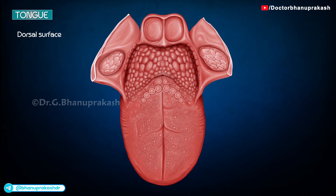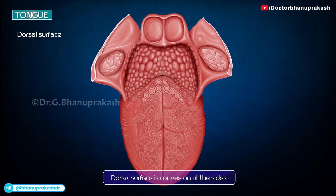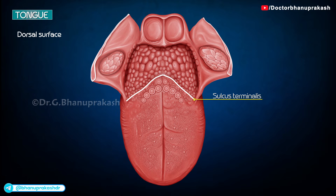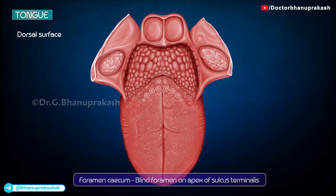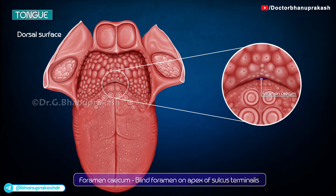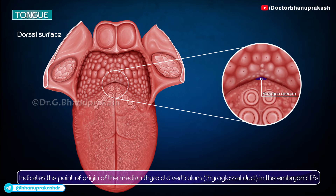The dorsal surface is convex. It is divided by a V-shaped sulcus, the sulcus terminalis, into two parts: ventral two-thirds, or oral part, and dorsal one-third, or pharyngeal part. The apex of the sulcus terminalis is marked by a blind foramen. The foramen cecum indicates the point of origin of the median thyroid diverticulum, or thyroglossal duct, in embryonic life.